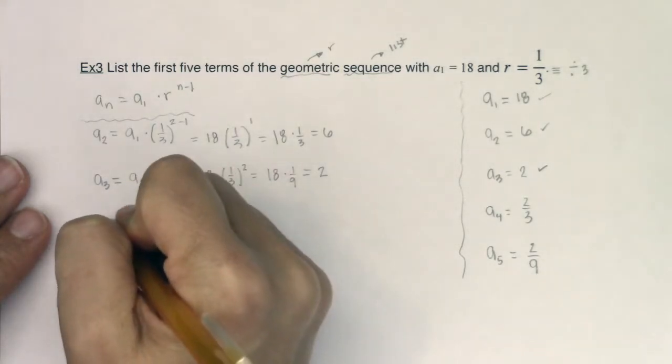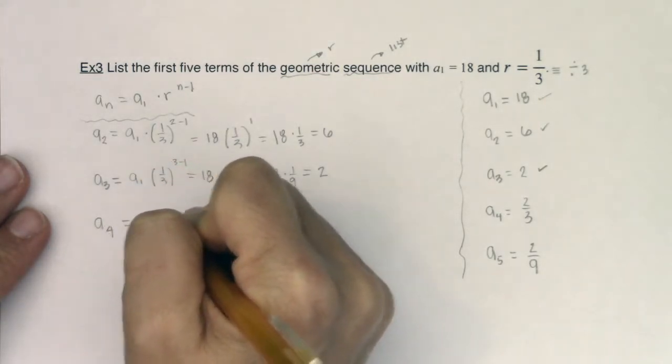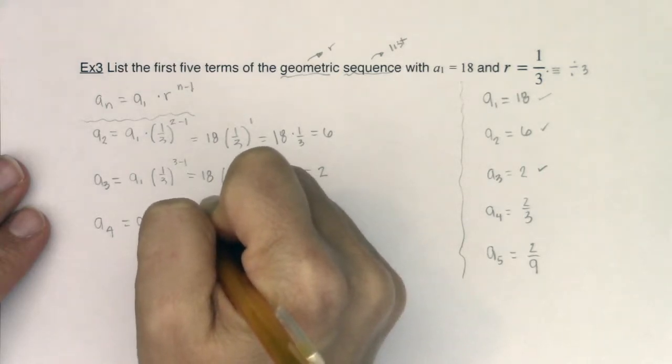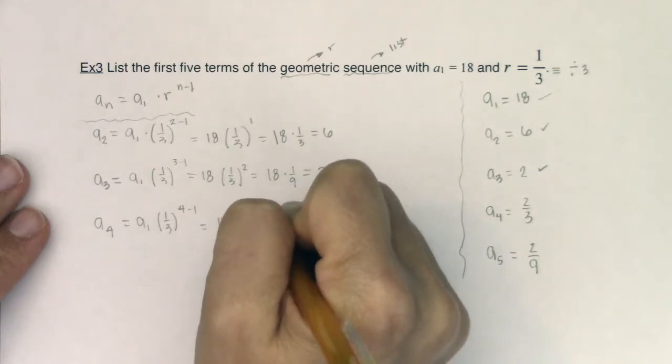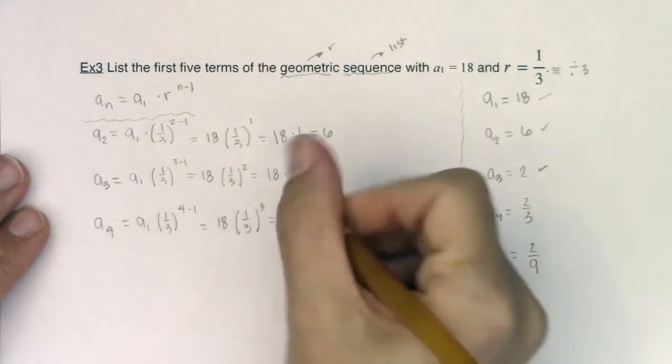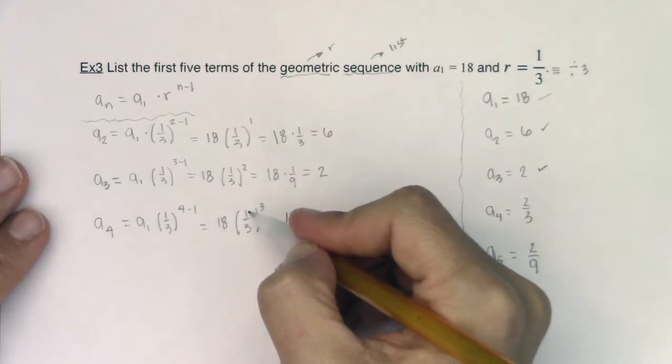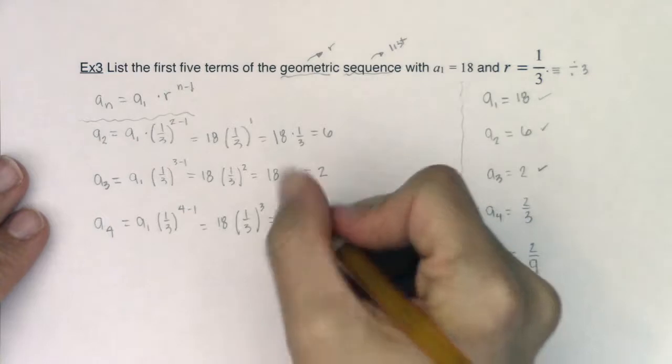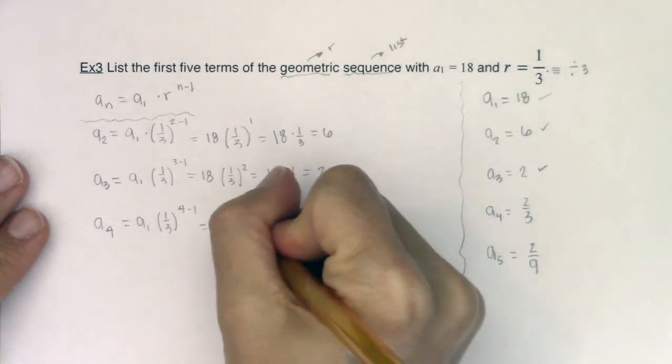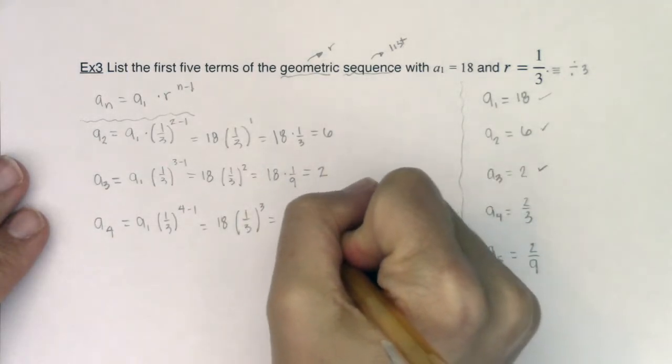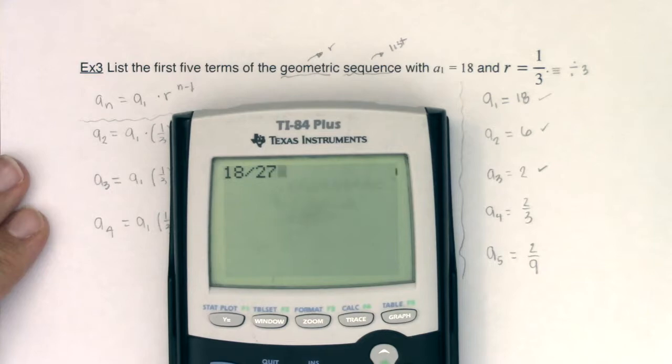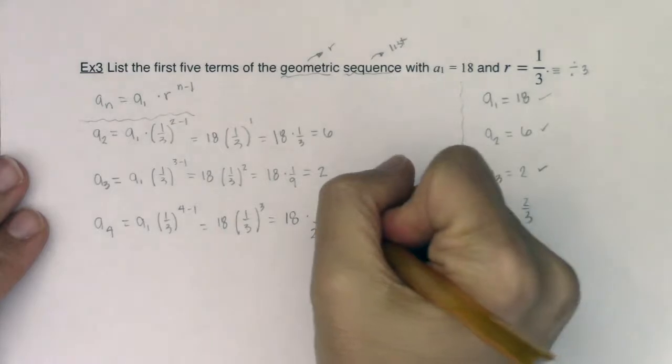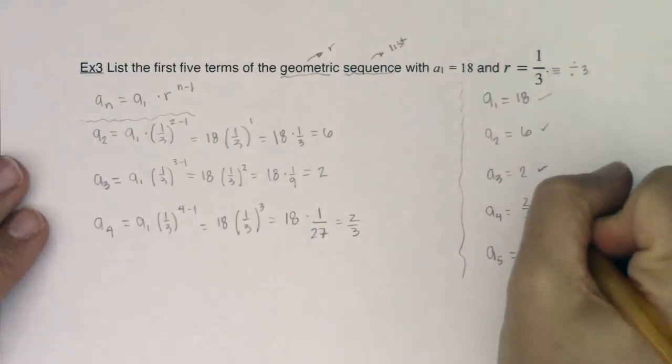Let's try a sub 4. A sub 4 would be your first term times 1/3 to the 4 minus 1. That's like saying 18 times 1/3 cubed. Alright, 27. Well if we take a look at our fraction or let's use our calculator 18 divided by 27 sure enough it is 2/3. Okay, that also checks out.